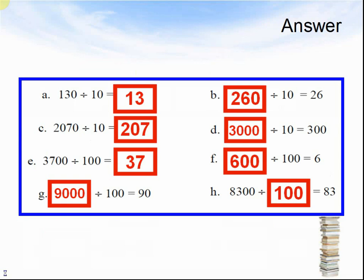The answers are: a. 130 ÷ 10 equals 13. b. 260 ÷ 10 equals 26. c. 2,070 ÷ 10 is 207. d. 3,000 ÷ 10 equals 300. e. 3,700 ÷ 100 is 37. f. 600 ÷ 100 equals 6. g. 9,000 ÷ 100 equals 90. h. 8,300 ÷ 100 is 83.